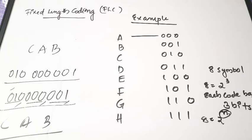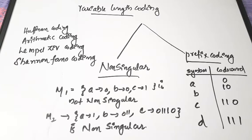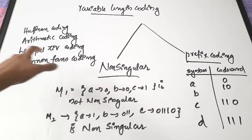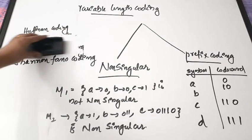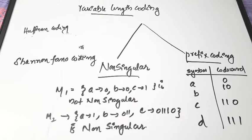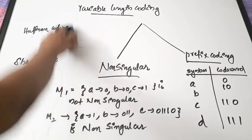The next type is variable length coding. From the name, it is clear that code words for various symbols have variable lengths. Examples of variable length coding include Huffman coding, arithmetic coding, Lempel-Ziv coding, and Shannon-Fano coding. Within the syllabus, the most important ones are Huffman coding and Shannon-Fano coding, which we will be discussing very soon.